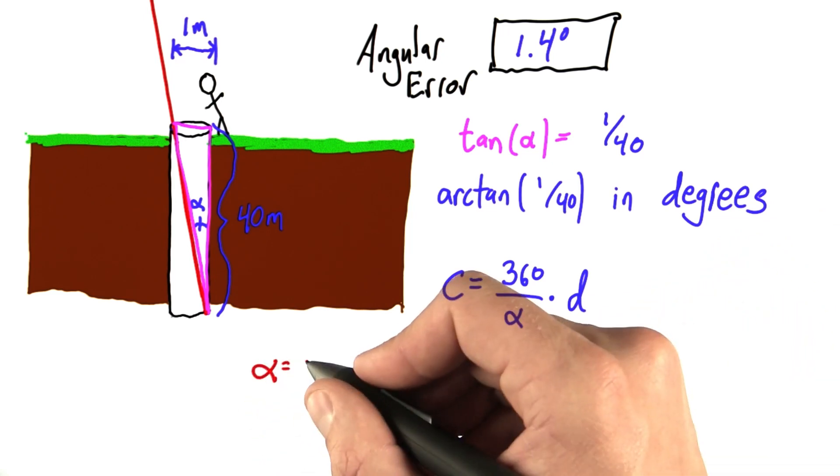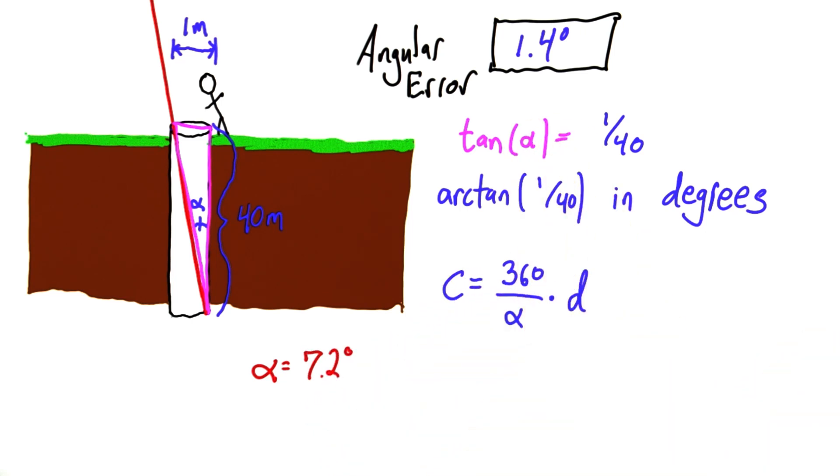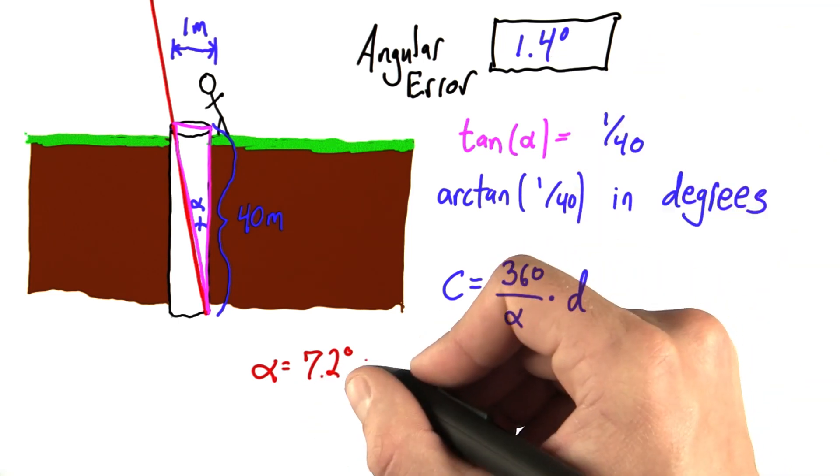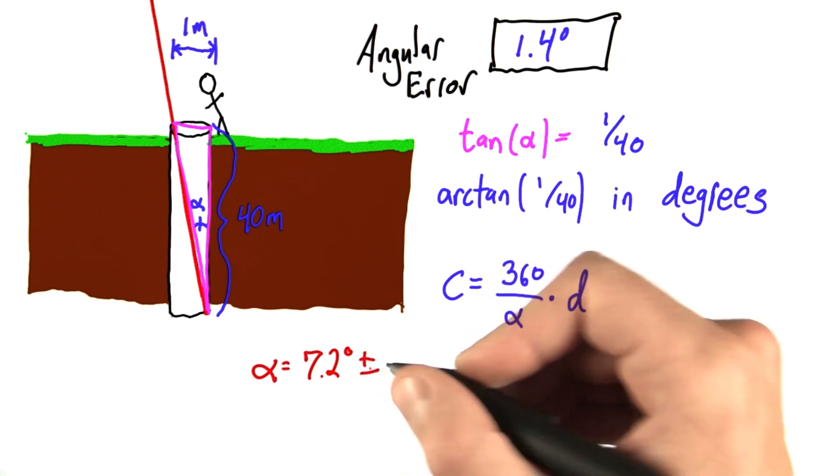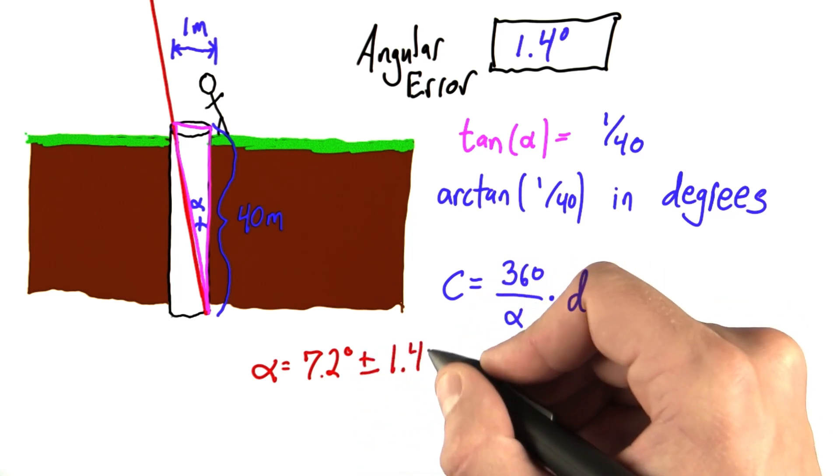The alpha we used in this calculation was equal to 7.2 degrees. Due to this new error, this new angular error, we don't necessarily trust this number. We know it's about right, but it could be off by plus or minus, and this is the symbol for plus or minus, 1.4 degrees.